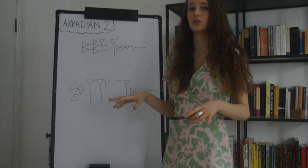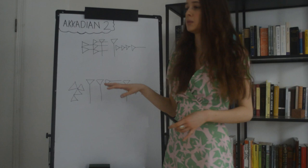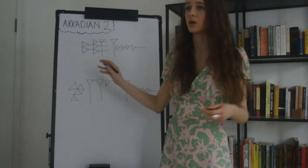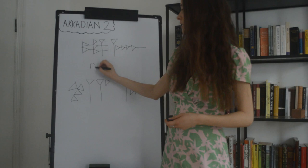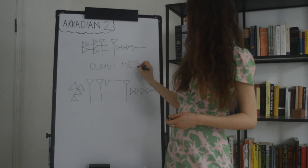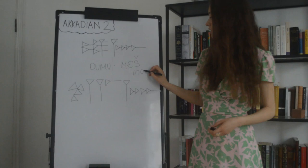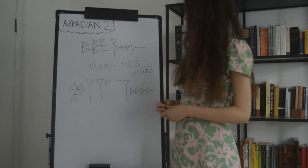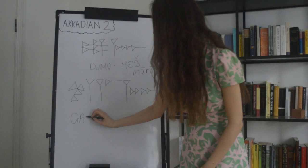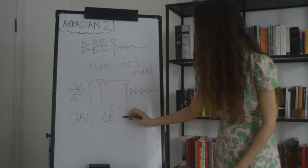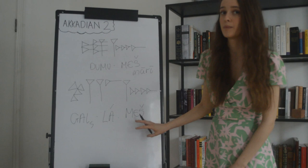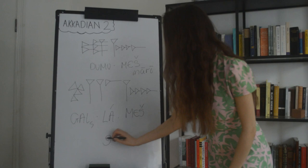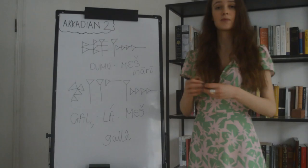One final point about transliterating logograms: plurality can be indicated by the logogram MESH at the end, as opposed to a phonetic rendering of the nominal plural form. For example, the signs 'DUMU' and 'MESH' — MESH indicates the plural form, and the word means 'marū' in Babylonian, the word for 'sons.' Similarly, another set of logograms representing the word for 'demons' in Akkadian also uses the logogram MESH to indicate the plural, rather than a phonetic rendering. The word for demons in Akkadian is 'gallu.'